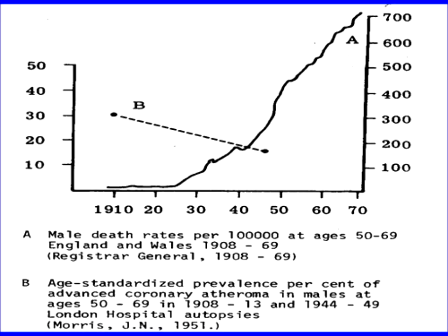This first slide comes from a review by Professor Mead in London. He has combined two types of data from the United Kingdom. This line shows the increasing epidemic of fatal coronary heart disease in the UK from a very low rate in 1910, exponentially increasing so that by 1970 there had been this enormous increase in fatal coronary heart disease, usually myocardial infarction. And that was seen across the world in developed countries.